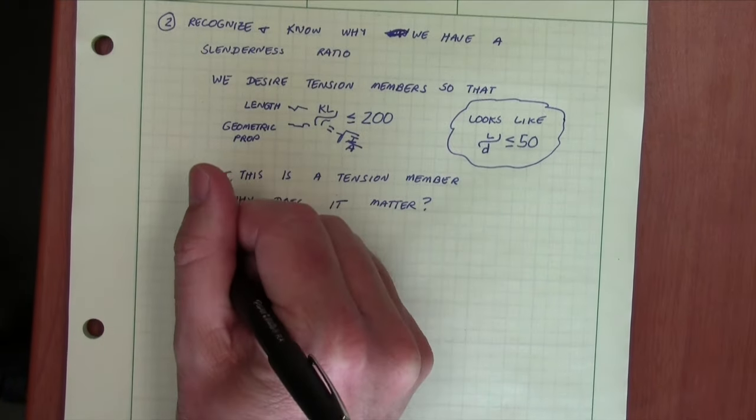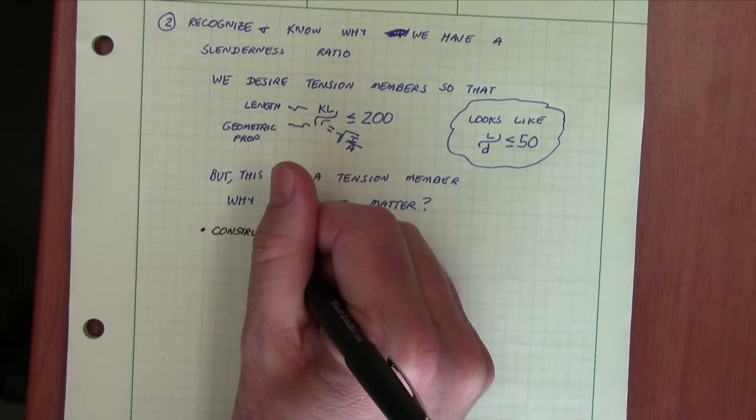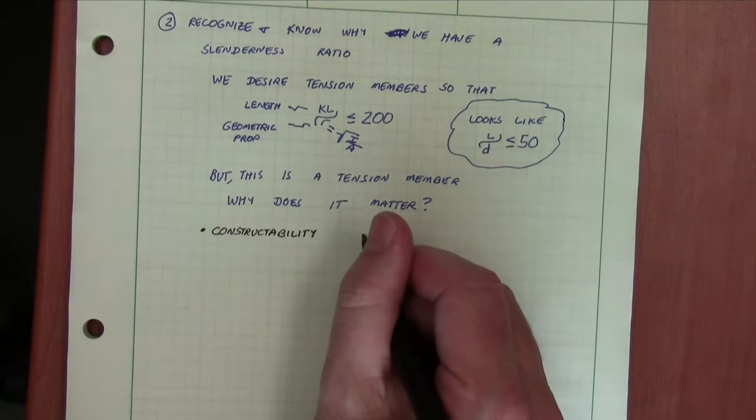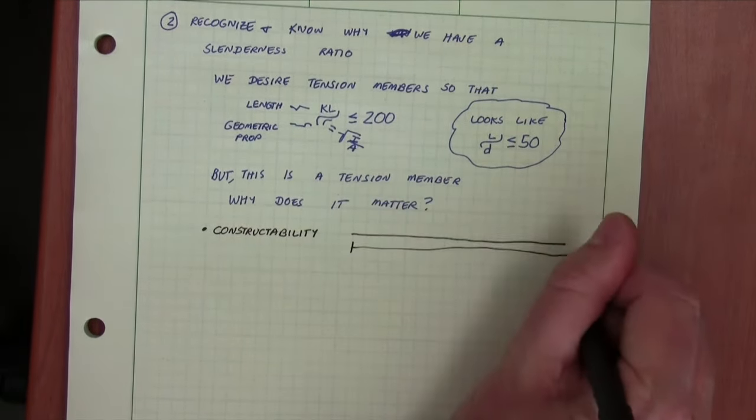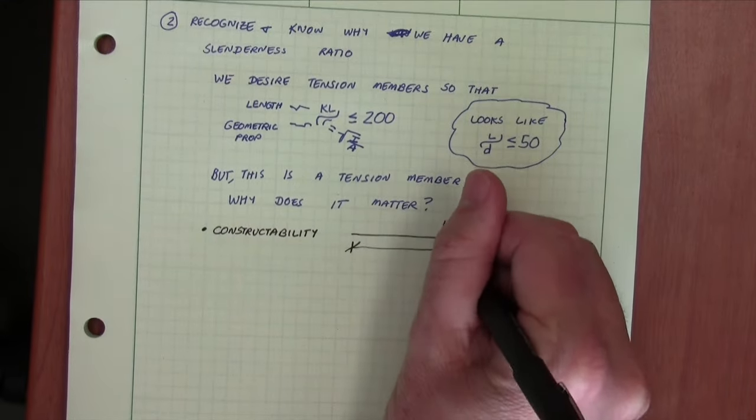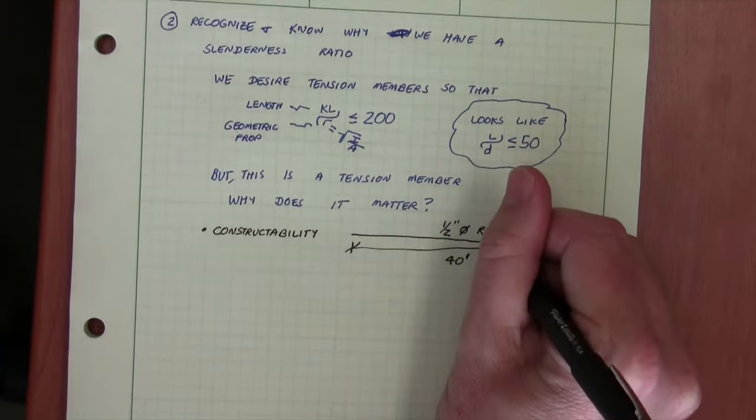So I'll offer a few reasons why we might have it. One is constructability. Can you imagine having a 40 foot long half inch diameter rod and how hard that would be to work with in practice.